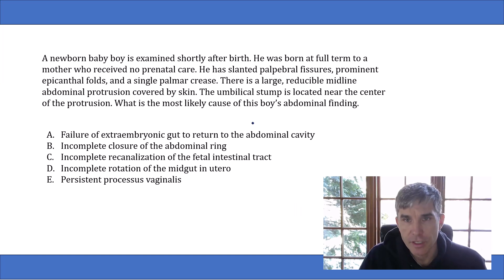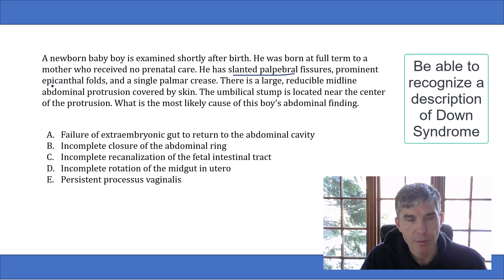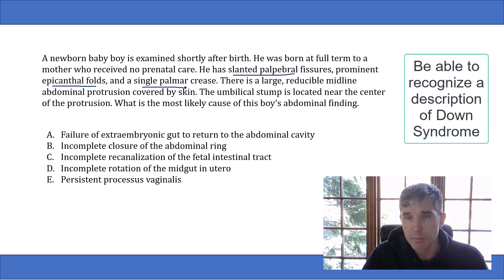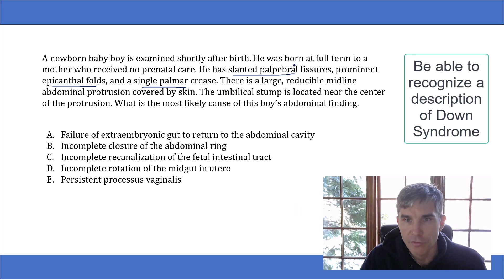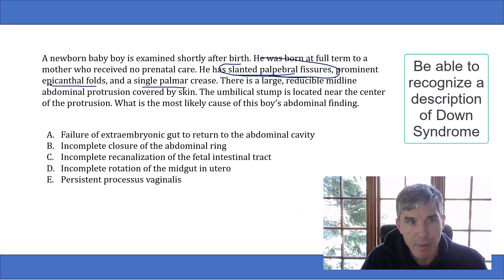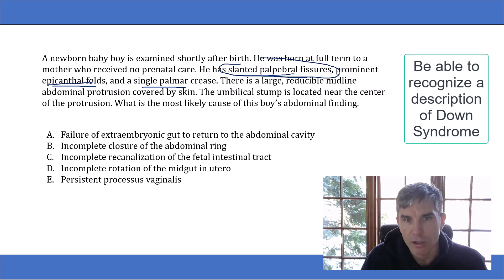The first thing you need to recognize is that they're describing a baby who has Down syndrome. Slanted palpebral fissures, prominent epicanthal folds, and a single palmar crease are all classic findings in children with Down syndrome. Before you take the Step 1 exam, you want to make sure you know what every one of these terms means. They're not going to simply tell you a baby has Down syndrome — instead they'll describe the physical findings. So look up these findings on Google, look at pictures of them, and make sure you understand what they mean.